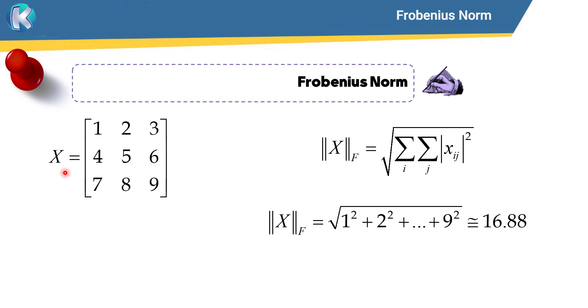As you can see, here is a matrix which is called X, and we want to calculate the Frobenius norm. In order to calculate the Frobenius norm, here is the formula, and it is the square root of the summation of each element in the matrix to the power of two.